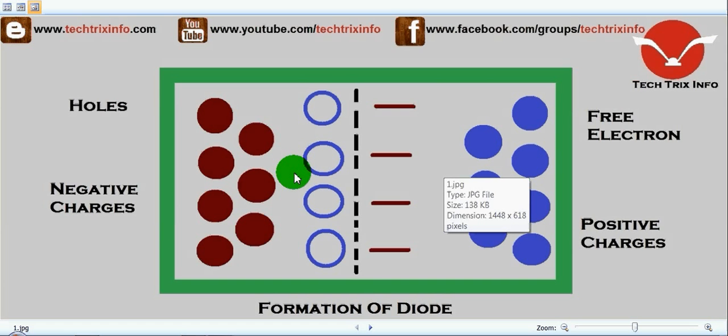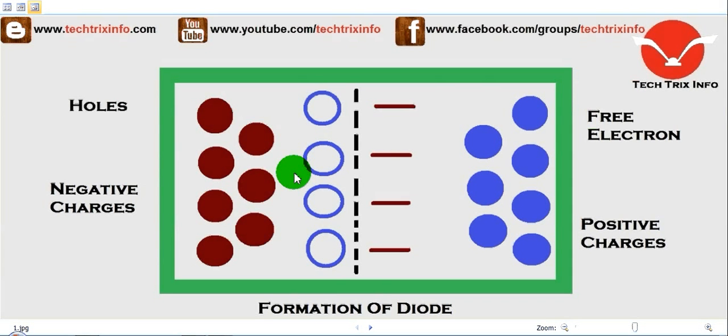When the battery connection has been reversed, what happens is that the holes in the P-type material are attracted towards the negative terminal and the electrons towards the positive terminal.